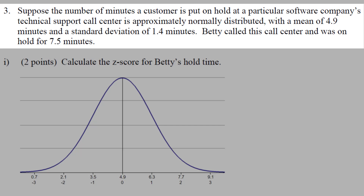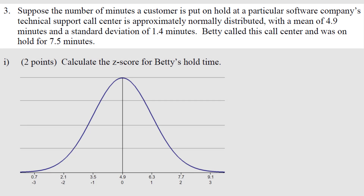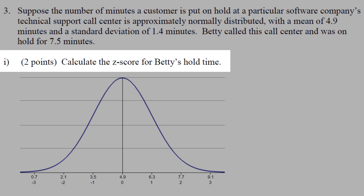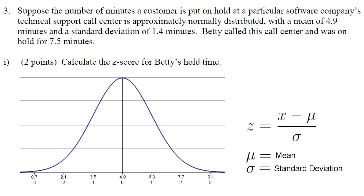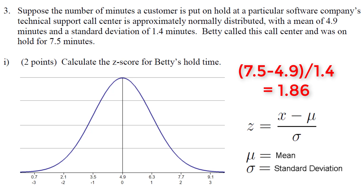Betty called the call center and was on hold for 7.5 minutes. The first question has us calculate the z-score for Betty's hold time. To calculate a z-score we need to know that a z-score is merely how many standard deviations an observation is above or below the mean. Using the formula, we have the observation 7.5 minus the mean 4.9, over the standard deviation 1.4. This solves out to 1.86.